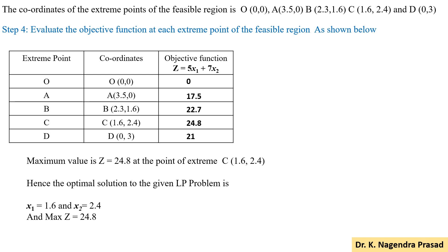Since the objective function is to maximize Z, among all the extreme points the maximum Z value is 24.8 at the extreme corner point C with coordinates (1.6, 2.4). Hence the optimal solution of the LP problem is Z equal to 24.8 at x1 equal to 1.6 and x2 equal to 2.4. Thank you.